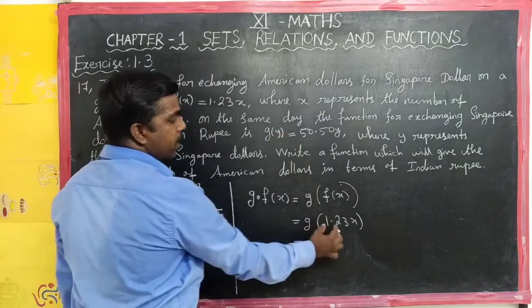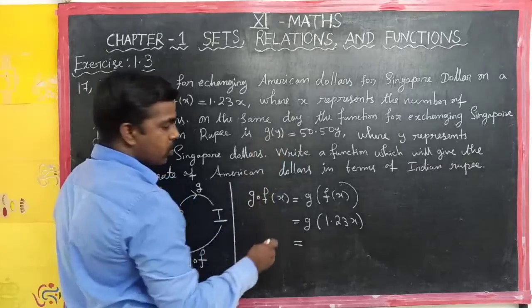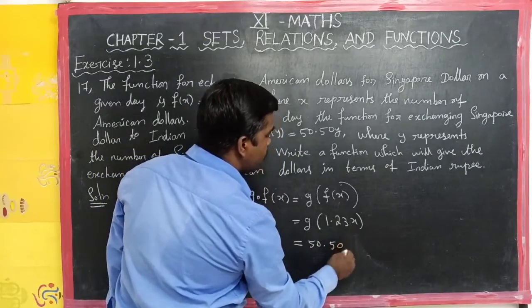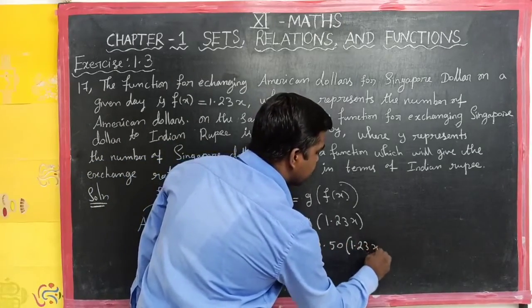The G of y value is 50.50y. So where y value is, substitute the value. Where y is, put the value 1.23x.